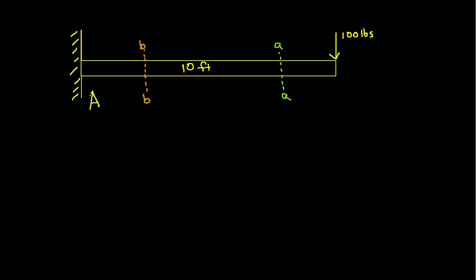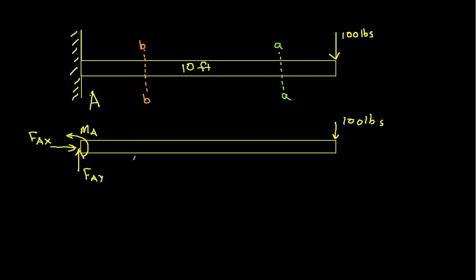So the first thing we'll do is a free body diagram of the entire beam. And with this free body diagram, then we will find the reaction forces. So our reaction force, we can have a vertical component, a horizontal component, and a moment. And then you can see, if we sum the forces in the x direction, we have FAx. There are no other forces in the x direction, so the sum of the forces in the x direction is 0, which says that FAx is equal to 0.